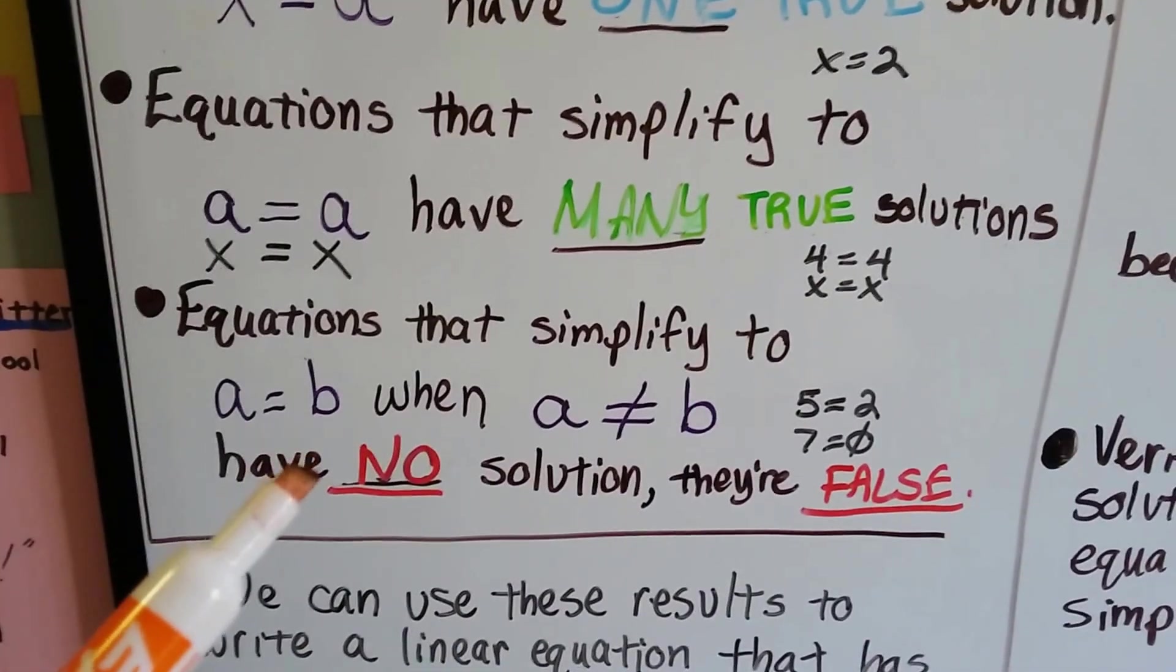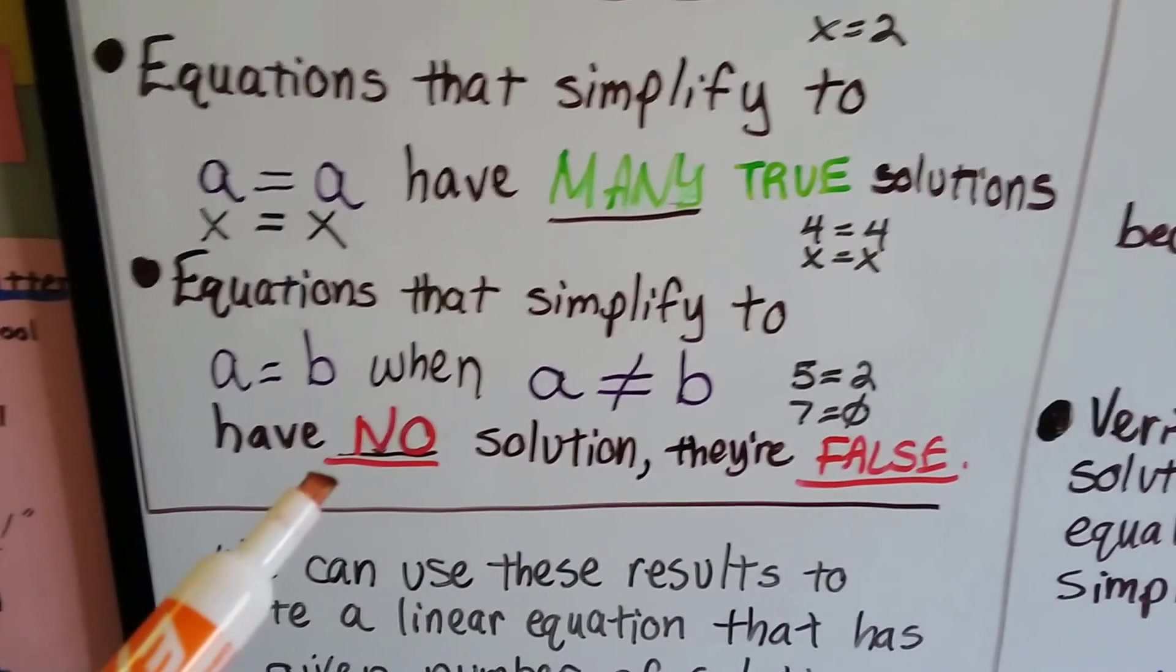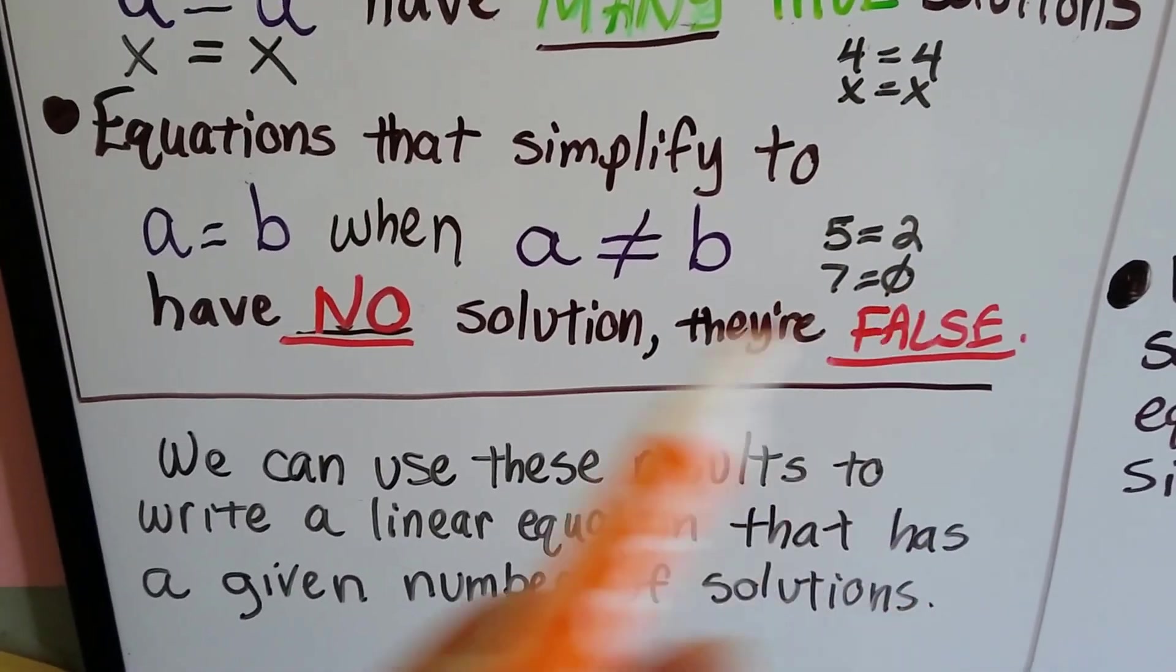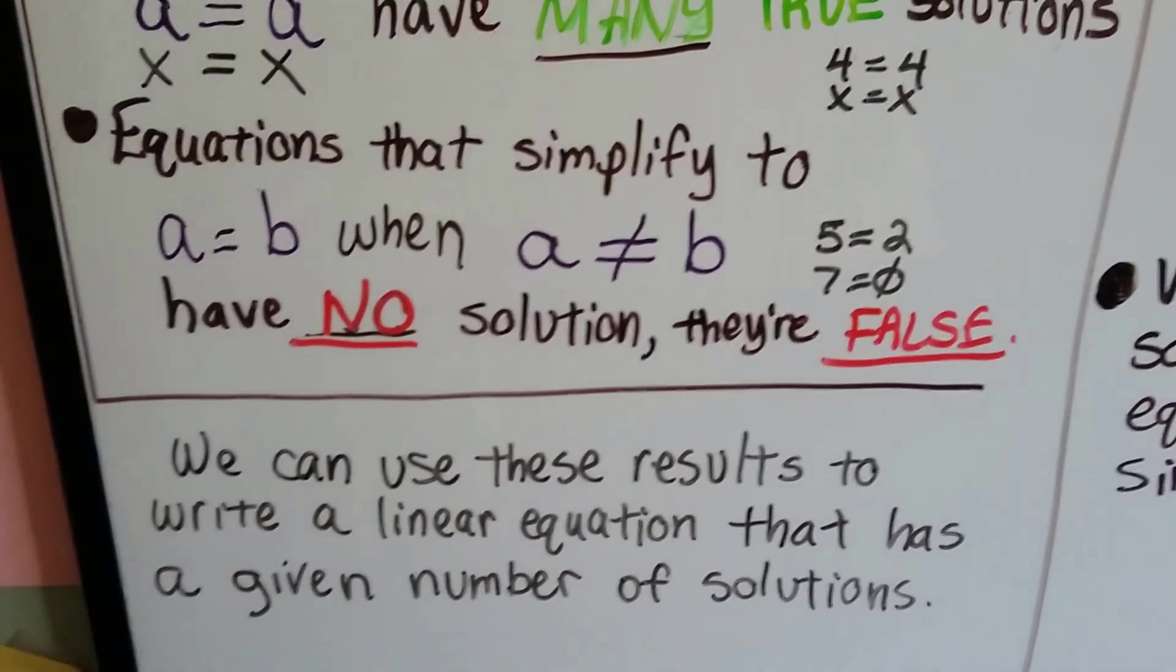When we have equations that simplify to a equals b, when the a and b are not equal to each other, there's no solution. They're false. Because if we have 5 equals 2, or 7 equals 0, or 16 equals negative 3, that's a false statement. That's not true.